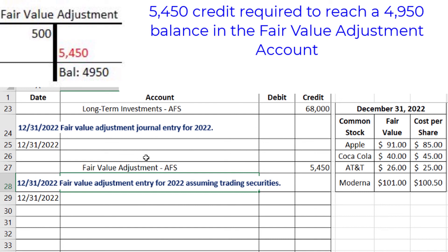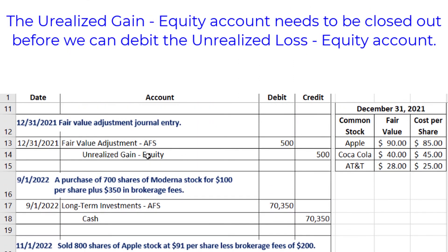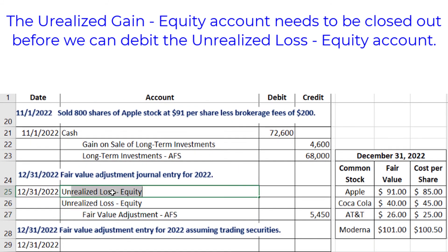There are two debit entries needed here. A common mistake is only putting one debit for unrealized loss — equity. But we also had an unrealized gain on equity from last year of $500, which is a permanent account that wasn't closed out. So first, we debit unrealized gain on equity for $500 to close out that account. Then the remaining difference — $4,950 — is the unrealized loss on equity for the current period.